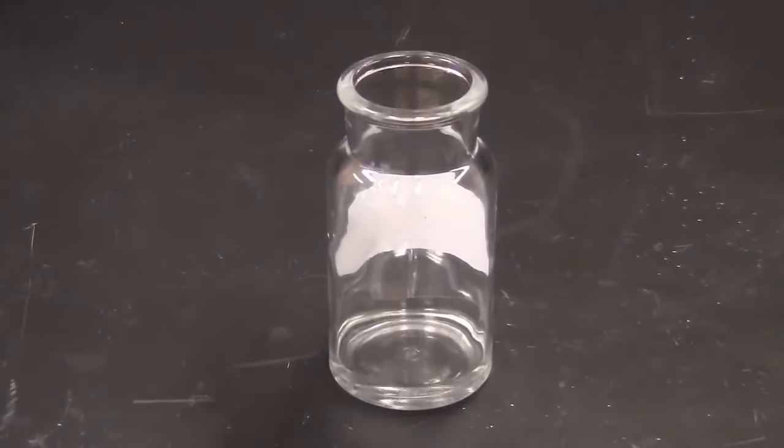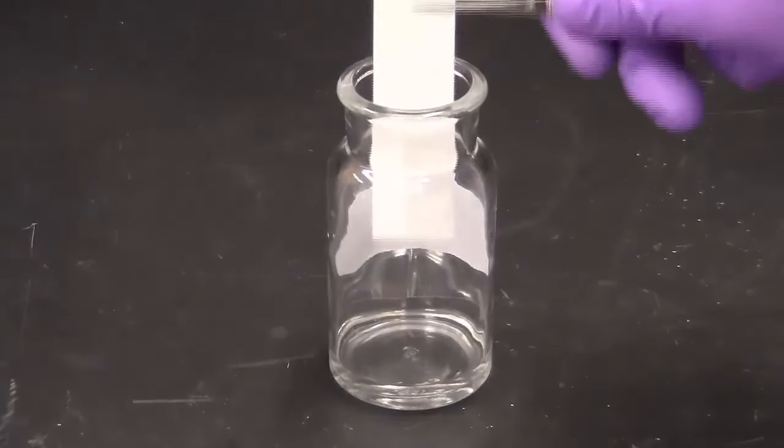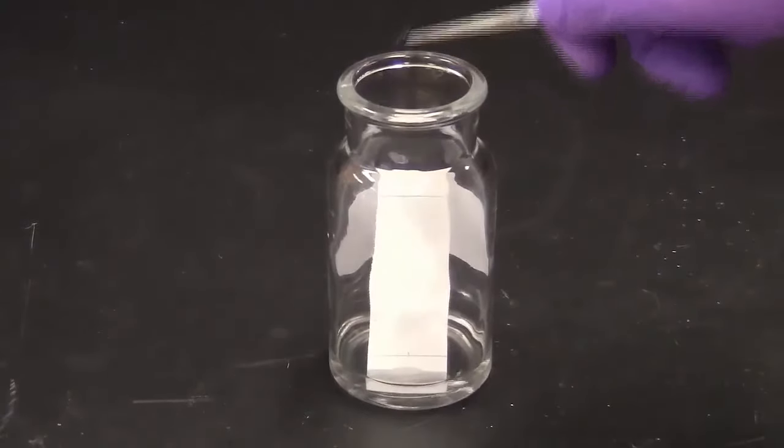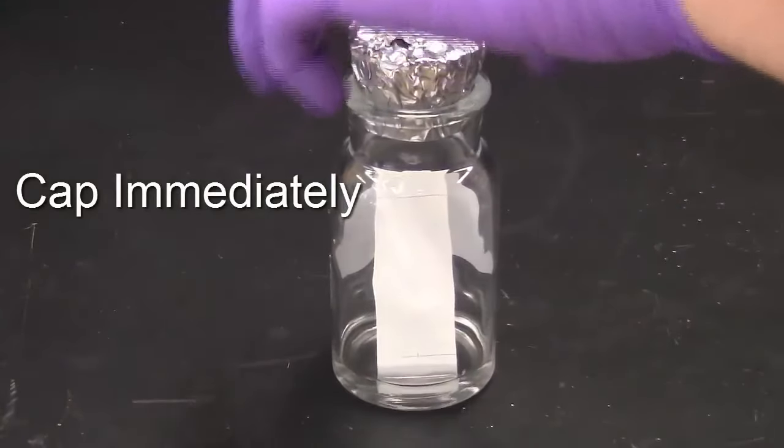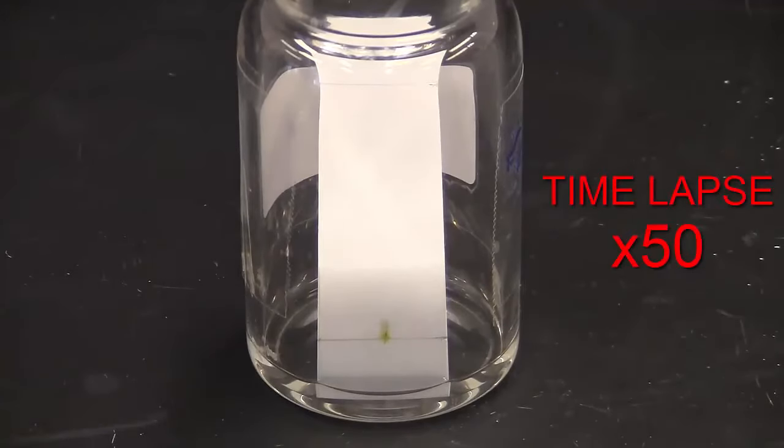Use forceps to place the TLC plate into the developing chamber. Cap the chamber immediately. The solvent will move rapidly up the plate. If you cannot see the solvent line, try shading the chamber with one hand.